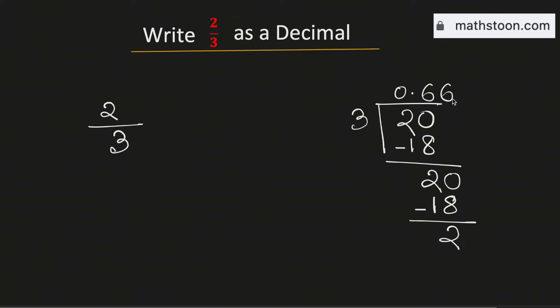So this way we are getting 0.666 and so on. This means this can be written as 0.6 bar.